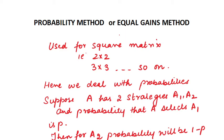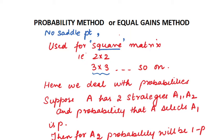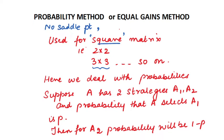The probability method, also called the equal gain method, is used when first, there is no saddle point, and second, the matrix is a square matrix. No saddle point means the players are using mixed strategies. This method is basically used only for square matrices: two cross two, three cross three, or four cross four, but we can't go beyond three cross three because otherwise the solution becomes very tedious.